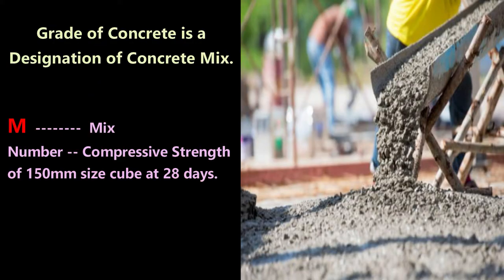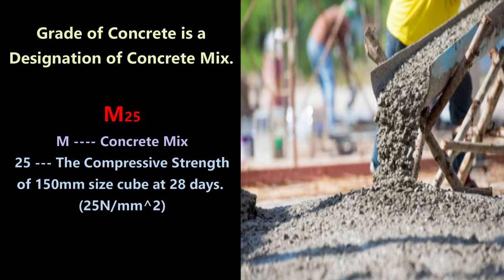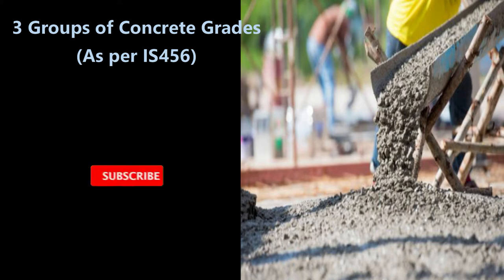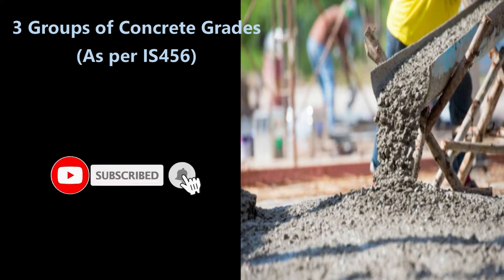The concrete grade is represented by the capital letter M, where M refers to the mix, followed by a number indicating the specified compressive strength. For example, M25 — here M represents concrete mix and the number 25 represents the characteristic compressive strength of a 150 mm size cube at 28 days, expressed in N/mm².